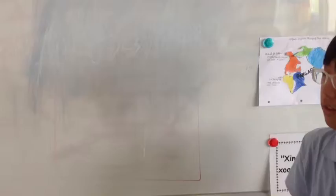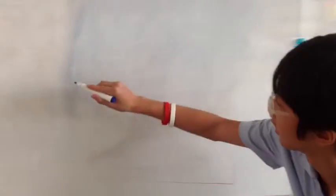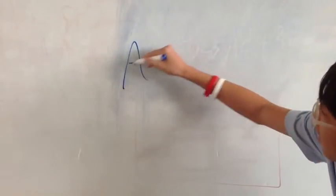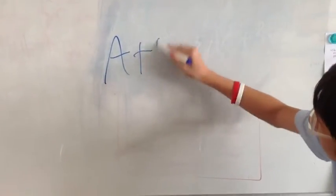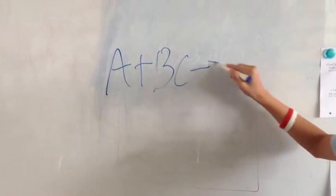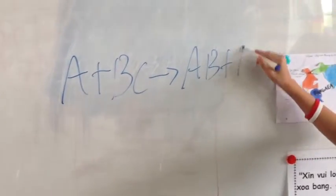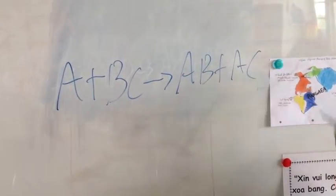Combustion is when carbon and hydrogen react — for example, decomposing butane, which is a flammable gas. The equation for a combustion reaction involves a hydrocarbon reacting with oxygen to produce carbon dioxide and water.